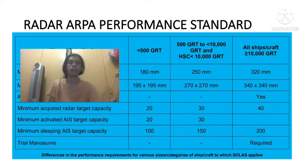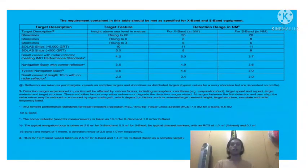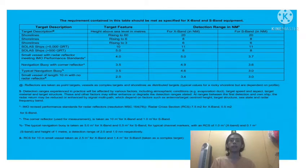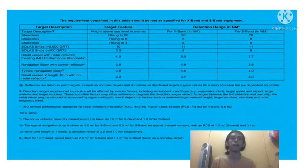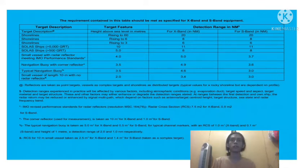All of these are included inside the performance standard of radar ARPA. The requirement contained in this table should be as specified for X-band and S-band equipment. The table includes target description, target feature, and detection range in nautical miles. One category is shorelines rising to 60 meters — for X-band it is 20 nautical miles, and for S-band it is also 20 nautical miles. Another shoreline rising to 6 meters shows 8 nautical miles for both bands.